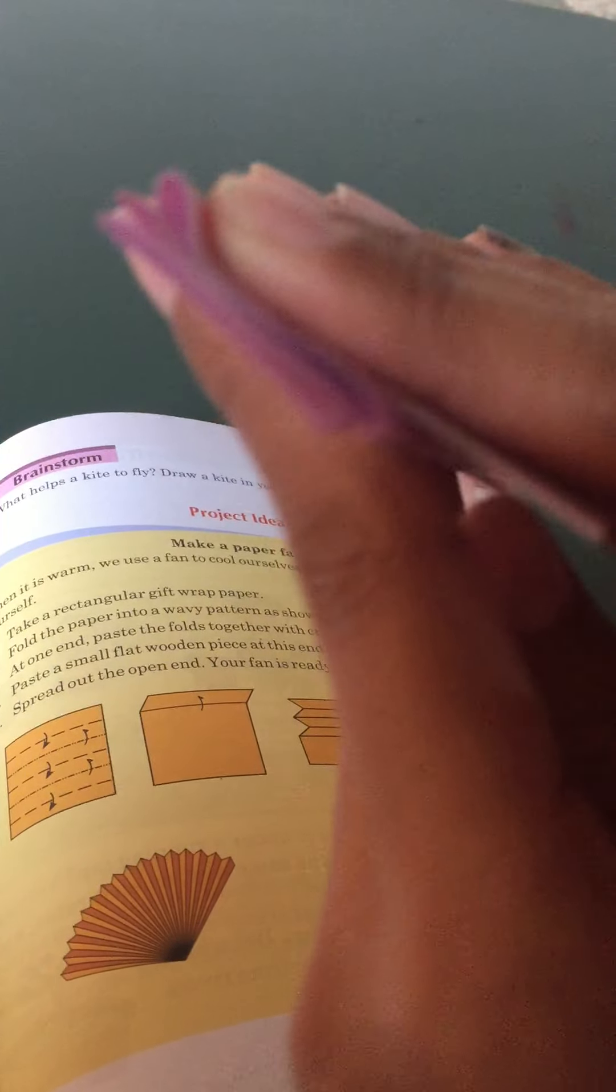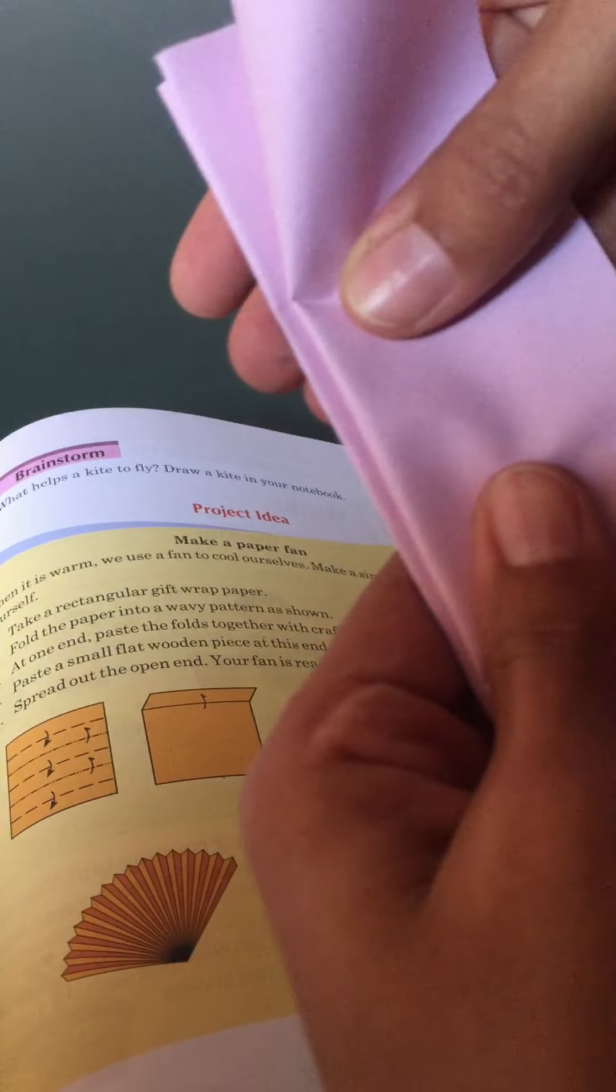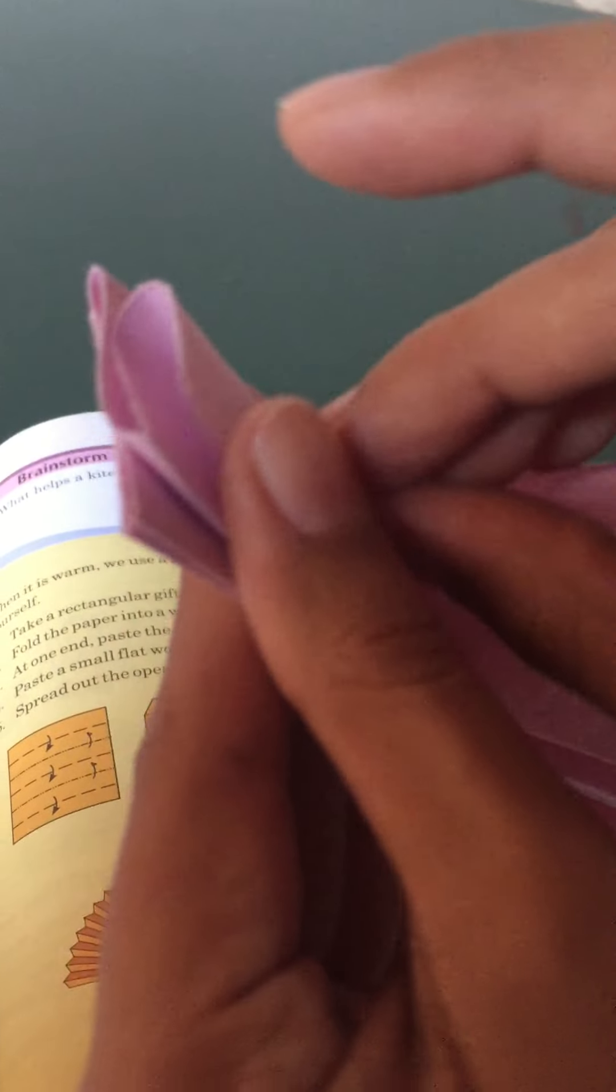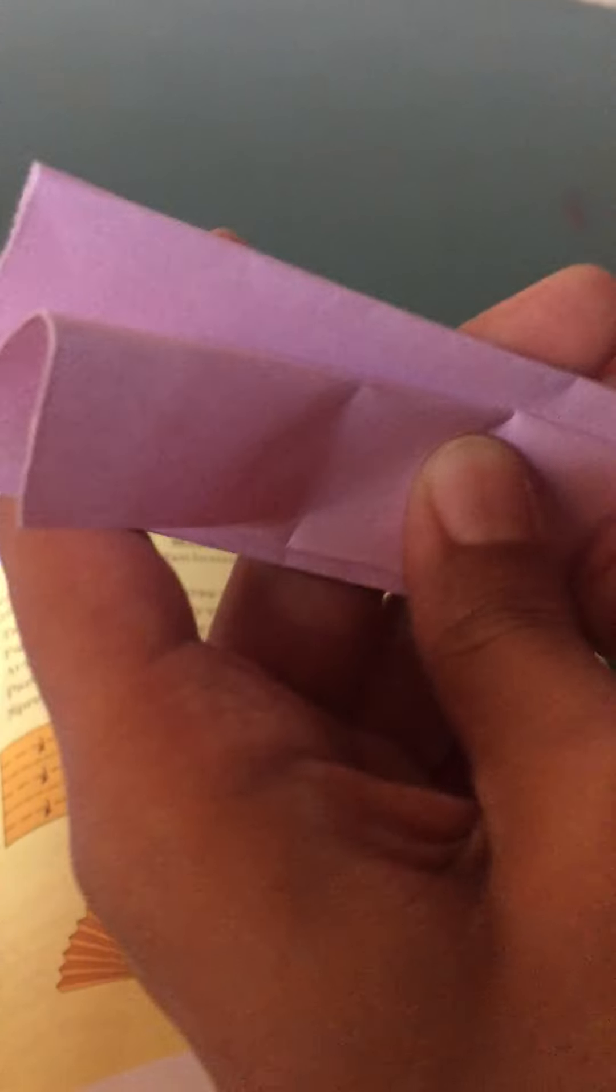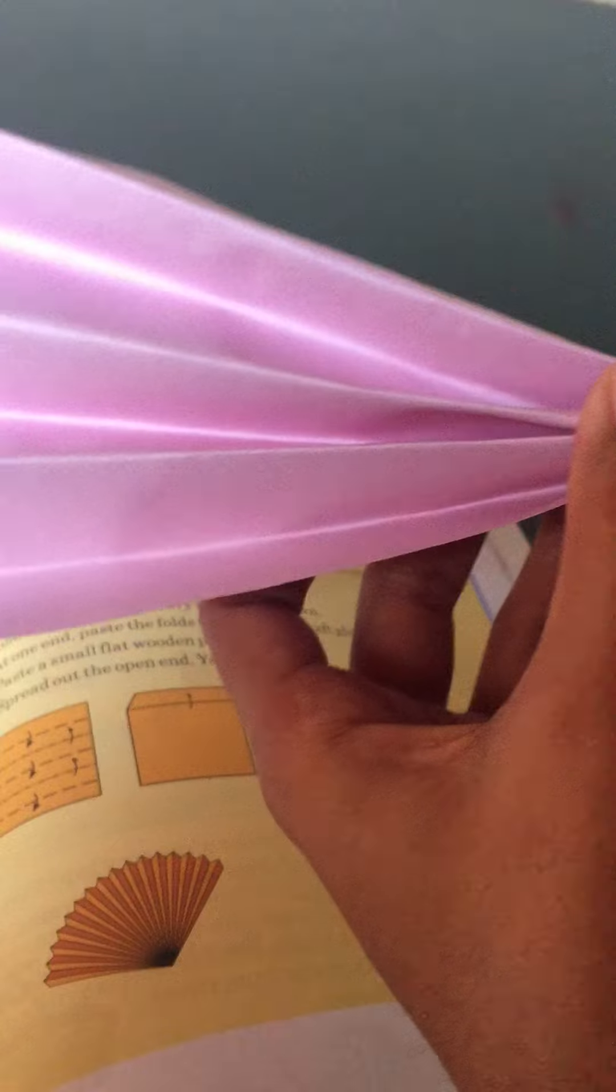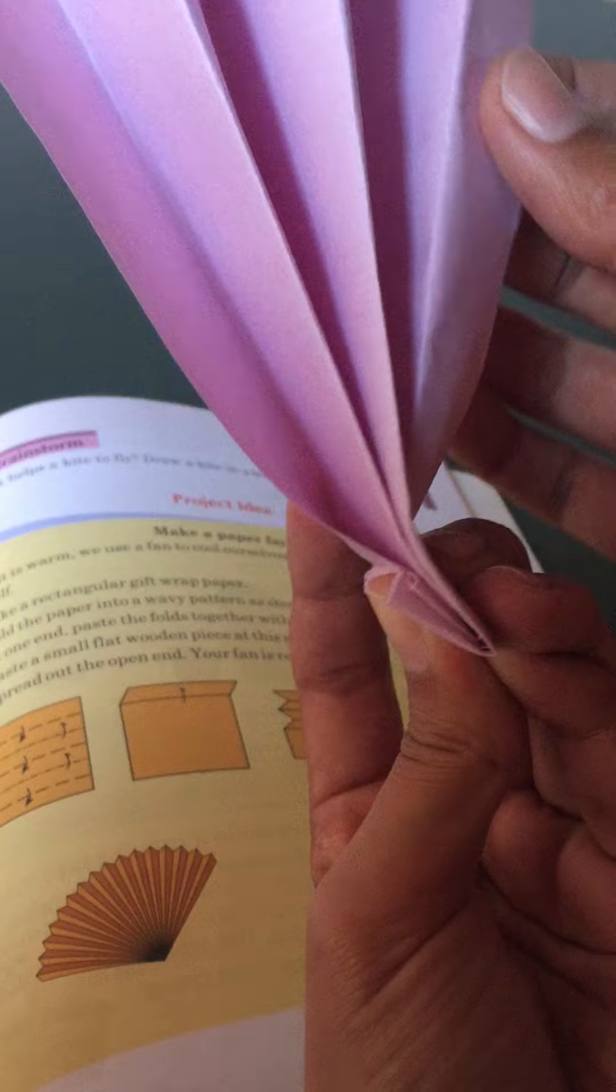Last folding we are going to do now. Now your paper fan is ready and at this end you can paste it with glue and here you can paste any wooden stick.